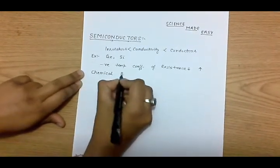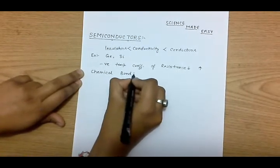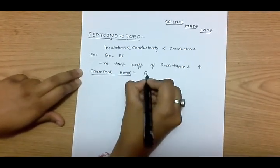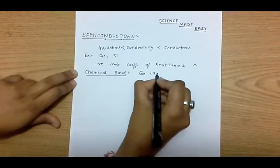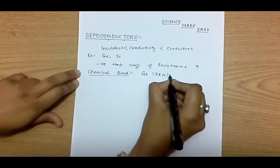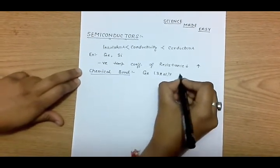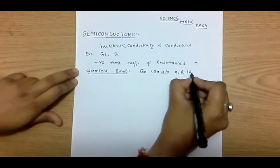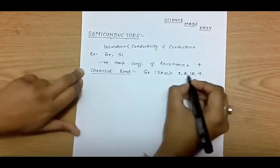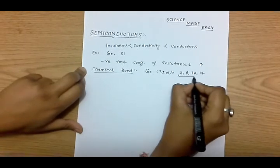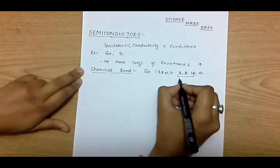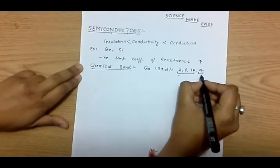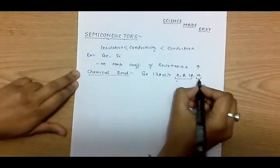Now let us discuss about the chemical bond formation in semiconductor materials. Consider the germanium atom — it has 32 electrons filled in electronic shells: 2, 8, 18, and 4 in the last shell. These 28 electrons along with the nucleus form a positive core, and the remaining four electrons are known as valence electrons.